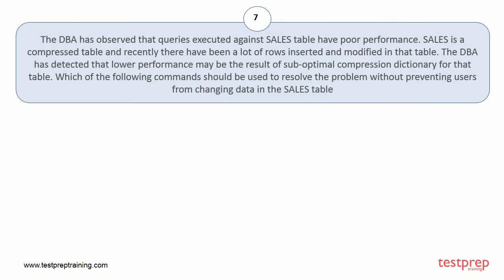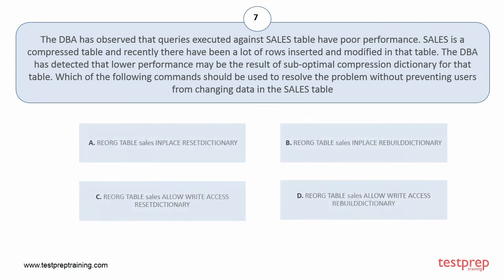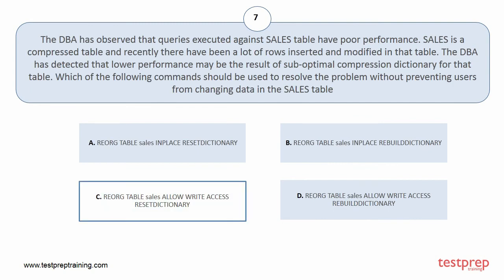Question number 7. The DBA has observed that queries executed against the sales table have poor performance. Sales is a compressed table and recently there have been a lot of rows inserted and modified in that table. The DBA has detected that lower performance may be the result of a suboptimal compression dictionary for that table. Which of the following commands should be used to resolve the problem without preventing users from changing data in the sales table? Your options are: A. Reorg table sales in place reset dictionary. B. Reorg table sales in place rebuild dictionary. C. Reorg table sales allow write access reset dictionary. D. Reorg table sales allow write access rebuild dictionary. The correct answer is option C.